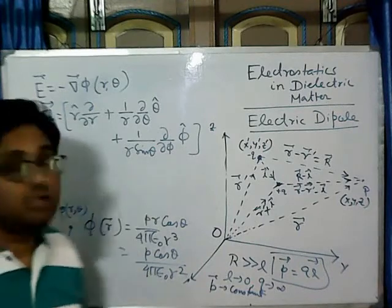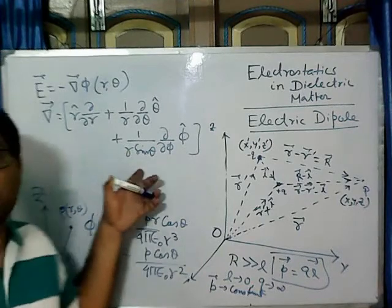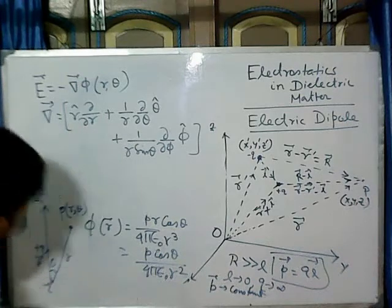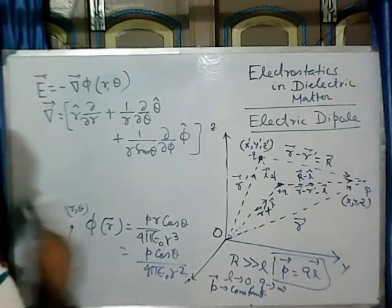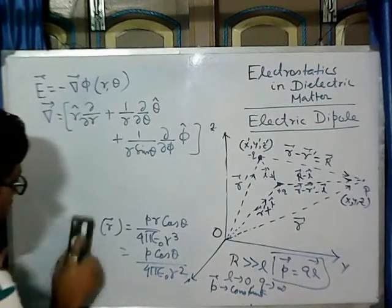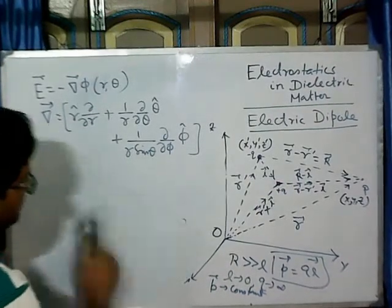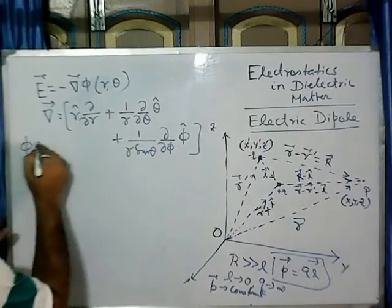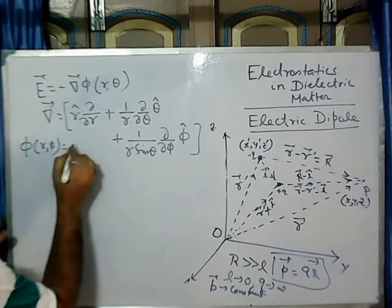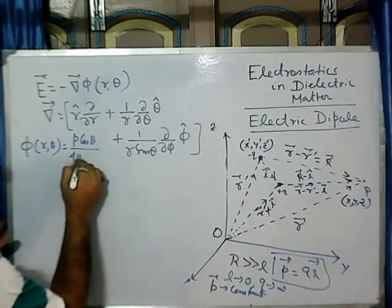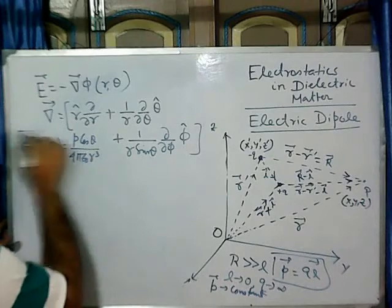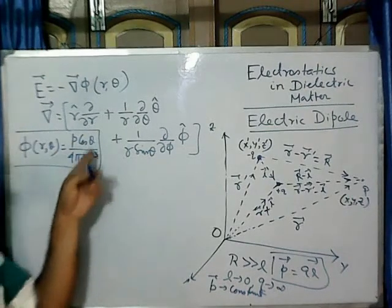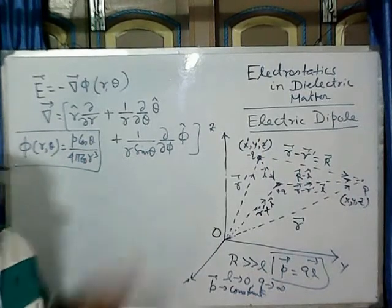Along the phi direction it will be 1 by R sine theta times del/del phi hat. Now let me write the phi form again here for convenience: phi equals P cos theta by 4π epsilon naught R squared. Here phi is dependent on theta and R squared — there is no dependency on phi.